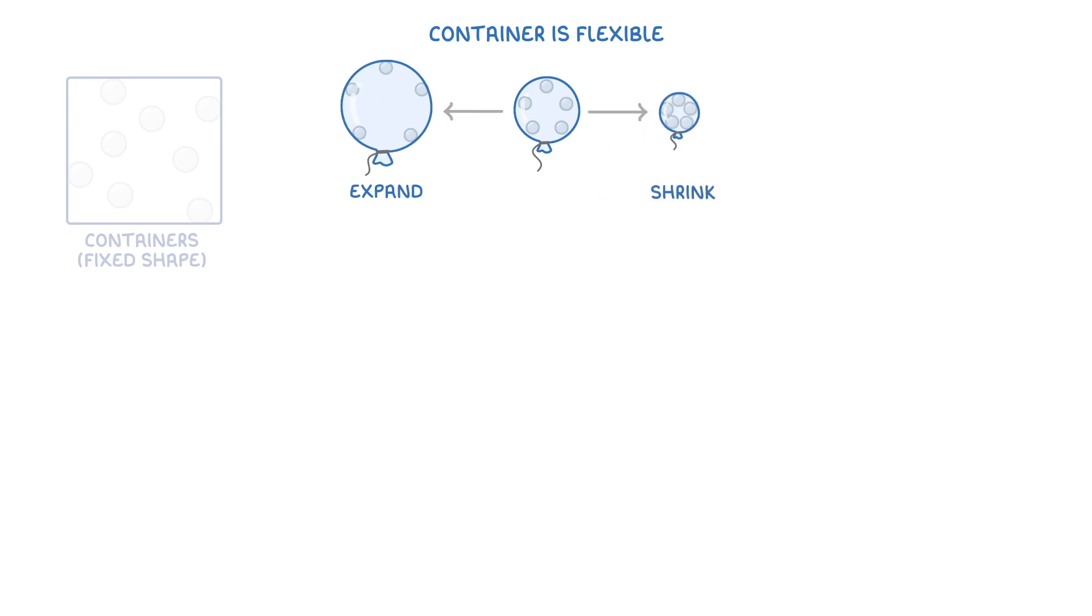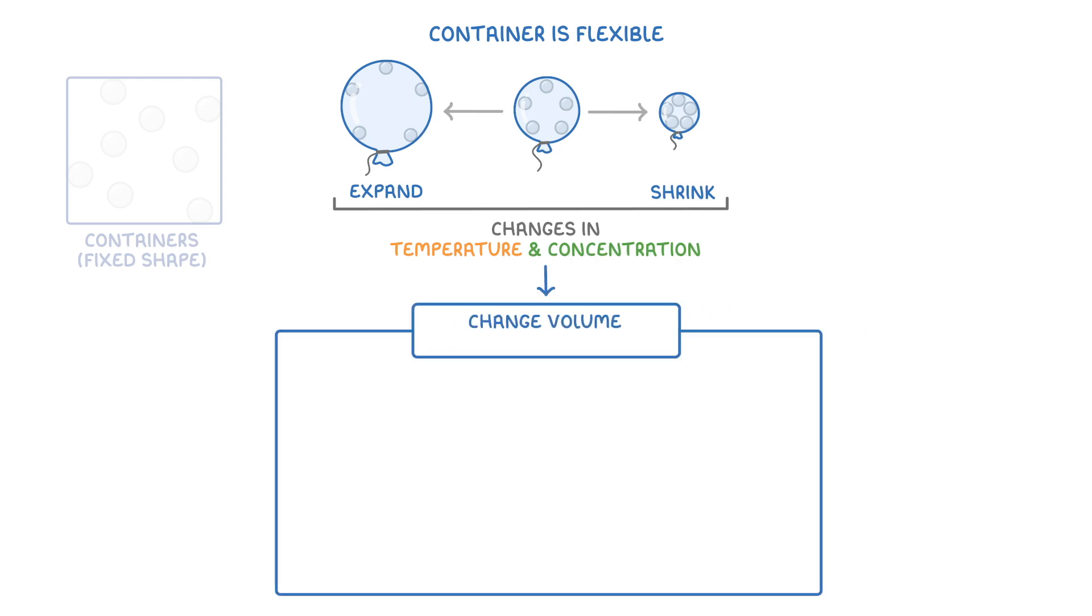The last thing I want to mention is that we've so far been considering our containers as a fixed shape. Sometimes though, like in the case of a balloon, the container is flexible, and so it can expand or shrink. In these cases, changes in temperature and concentration will change the volume of the container, rather than the pressure.